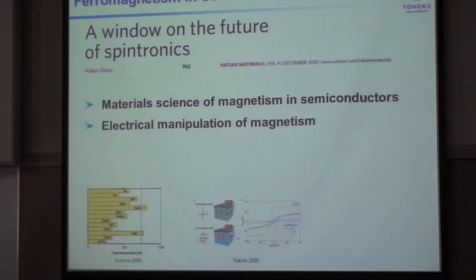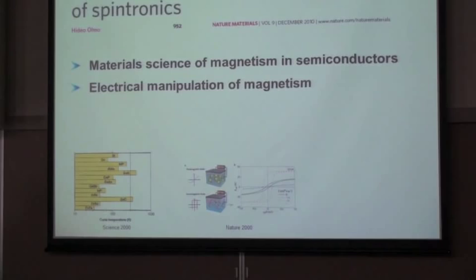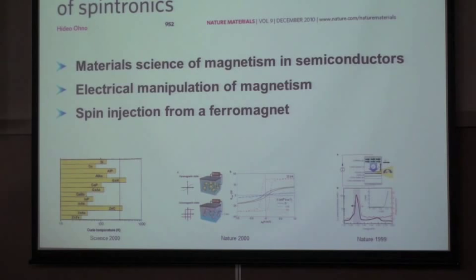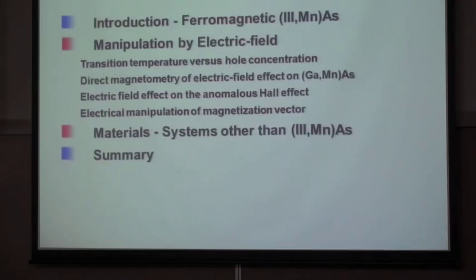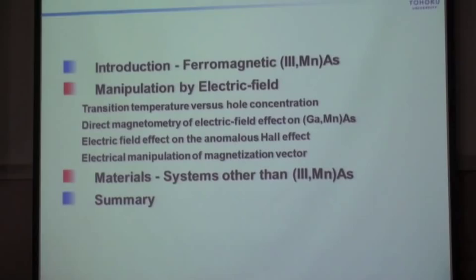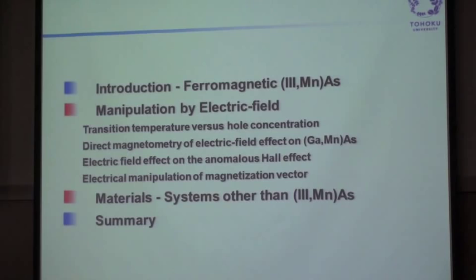We did electrical manipulation of magnetism — we changed the ferromagnetic phase transition temperature by applying electric field, controlling the carrier concentration in ferromagnetic semiconductors. We also did what was actually the first experiment on spin injection: solid-state spin injection from a ferromagnet using ferromagnetic semiconductor and non-magnetic semiconductor heterostructures. Today I would like to first talk about electric manipulation of magnetism.